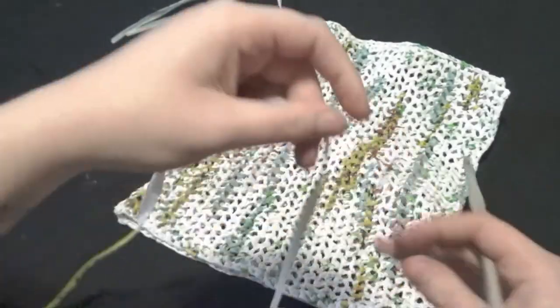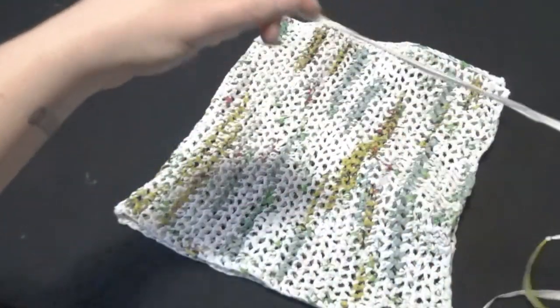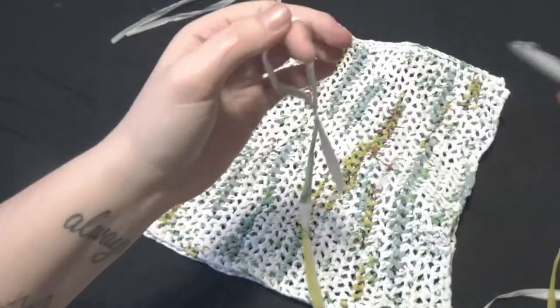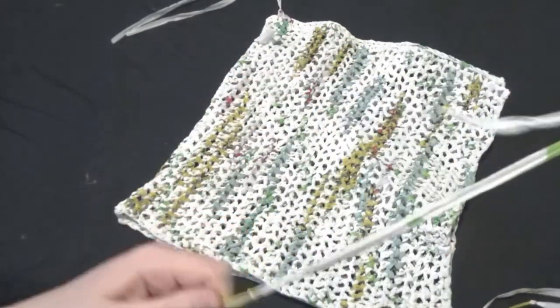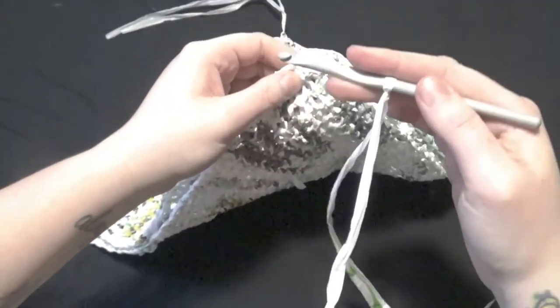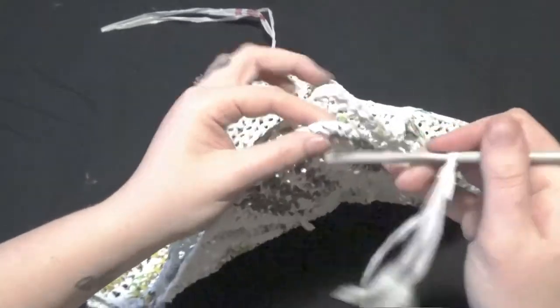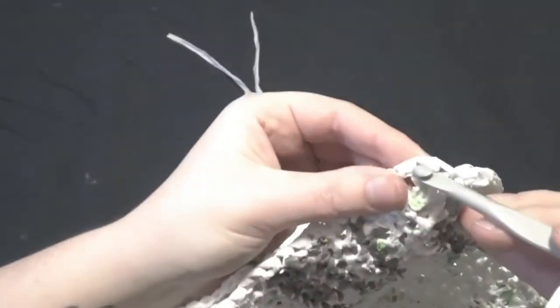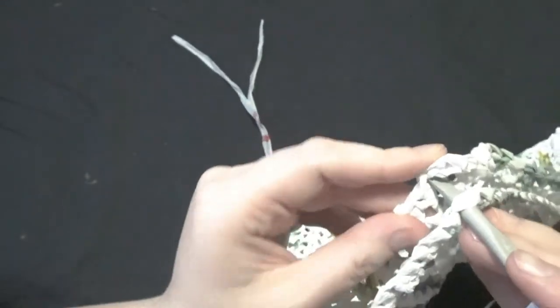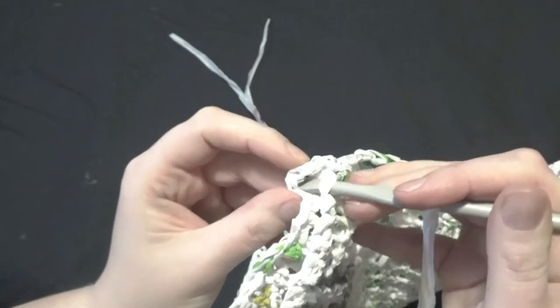So we're going to do the same thing we did to start off our chain with: we're going to make a loop and we're going to put it on our hook like this. And we're going to put that through the first little spot in here and then also go across to the one across from it there like so.